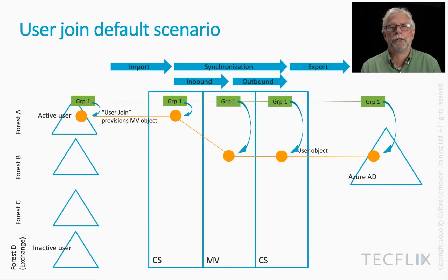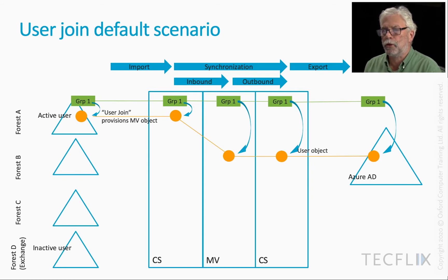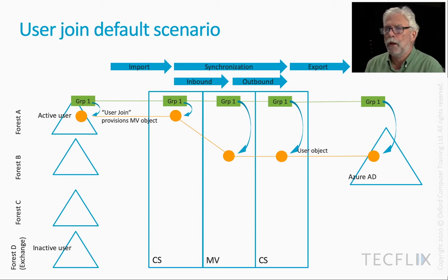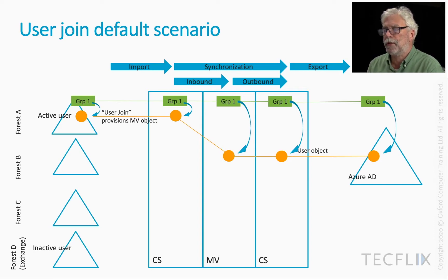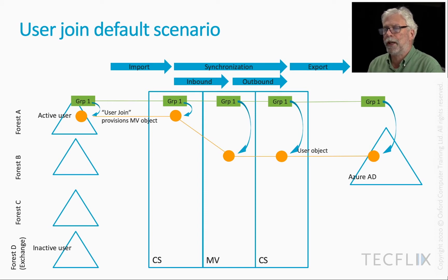Here's a pictorial representation of this user join scenario. We start off with an active user in Forest A, along with a group. There's also a rule — the one that's going to provision a metaverse object, with a link type of provision — but by convention it's called the user join rule because it contains the all-important join definition. Because this is the first object that came along, the join rule doesn't do anything and we provision a metaverse object. Because of the other outbound rules in place, we end up with one object in Azure AD. The group also gets provisioned in Azure AD and membership flows through exactly as we want.